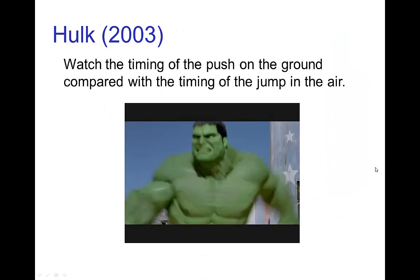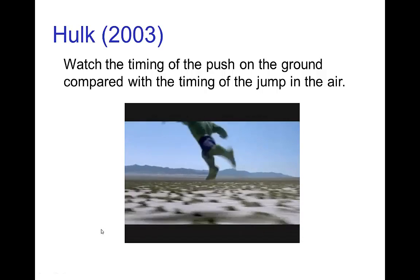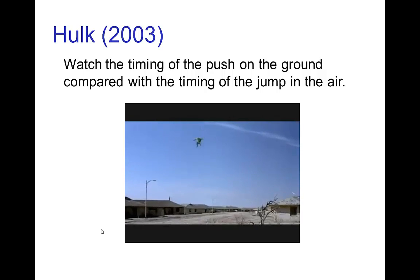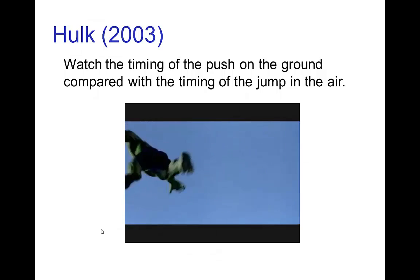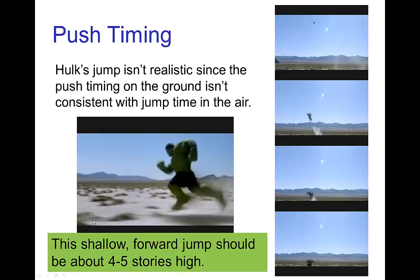Let's look at the timing of a few jumps done by the Hulk in this film. We see him running and getting ready to jump, and there he goes — an extremely high, far jump. We're going to see another very large jump here in a moment. Now, these jumps don't look realistic. The time in the air is fine, but the problem is that the time the Hulk is pushing off on the ground simply isn't consistent with the enormous jump magnification he's getting.